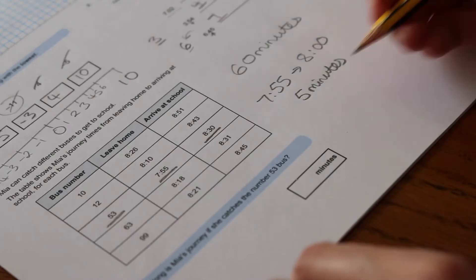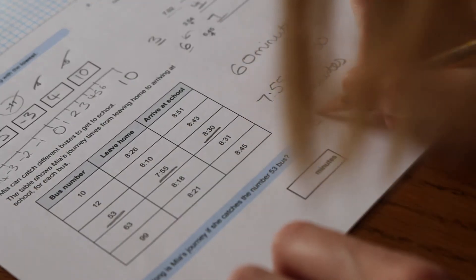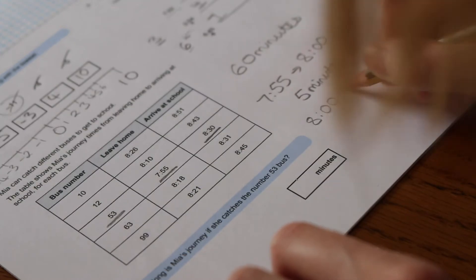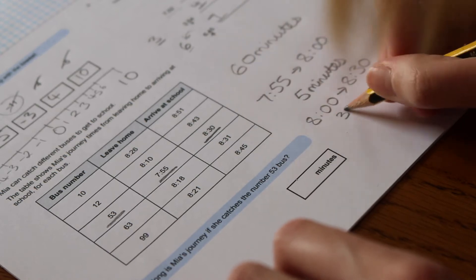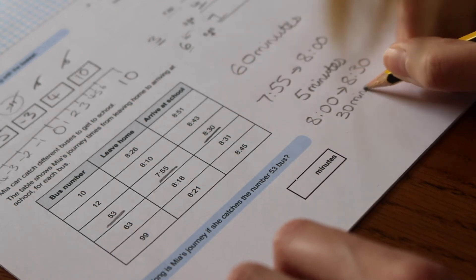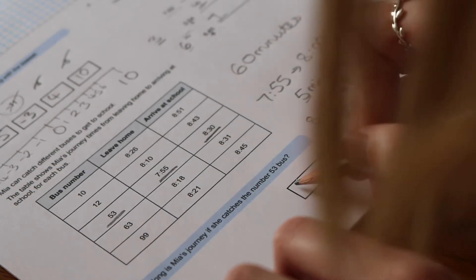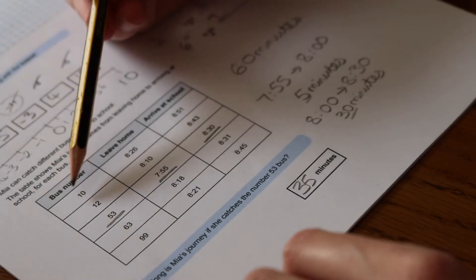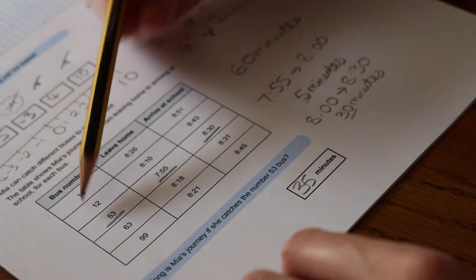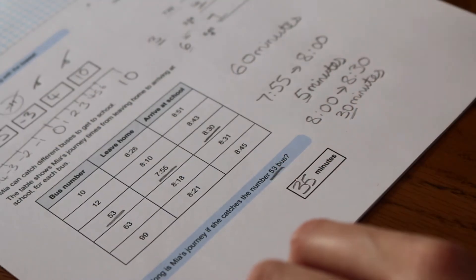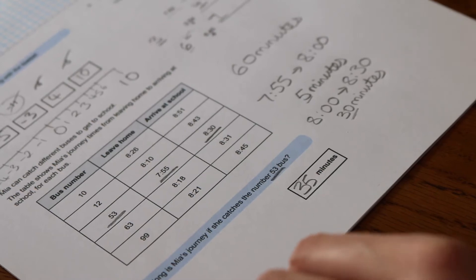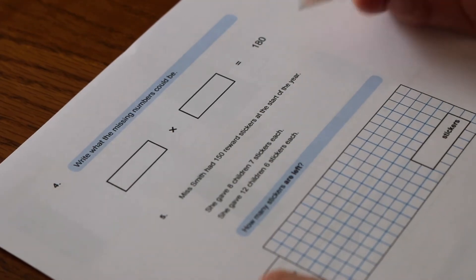And we know that she leaves the house at 7:55, so 7:55 to 8 o'clock would be 5 minutes. Then 8 o'clock to 8:30 would be 30 minutes. Then we need to add 5 and 30, which is 35 minutes. We don't need to look at any of these other rows on the table because we know that she catches the number 53 bus.